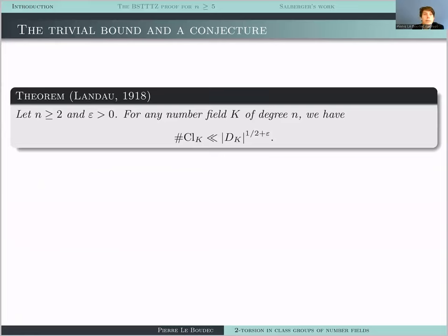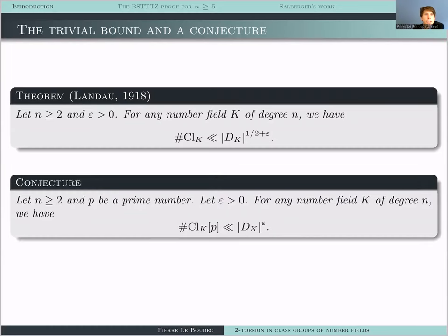Here is a classical theorem due to Landau. For any N at least two and any epsilon positive, for any number field K of fixed degree N, the class group of K is bounded above by roughly the square root of the absolute value of the discriminant. There is a constant hidden in this notation which depends on N and epsilon, but we don't care about that dependence. That's a very classical result. And here is the conjecture.